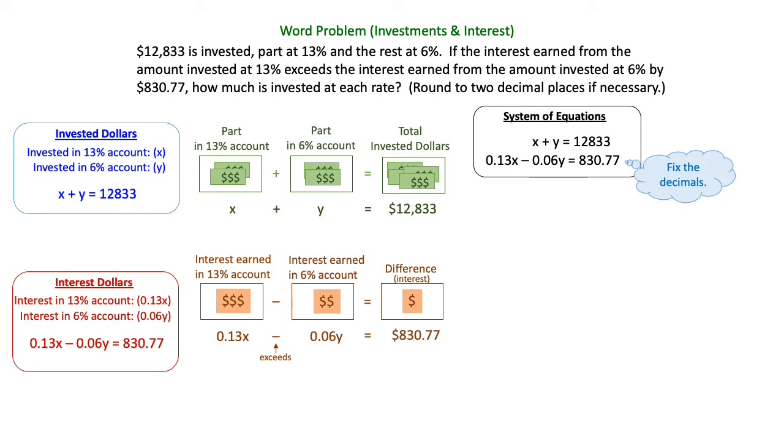I'm going to first fix the decimals on the second equation, make that a little easier to work with. And my suggestion for that is just multiplying by 100, which allows you to move the decimal two places to the right in each of those numbers. So that new equation will be 13X minus 6Y equals 83,077. It's a big number, but we can handle it.